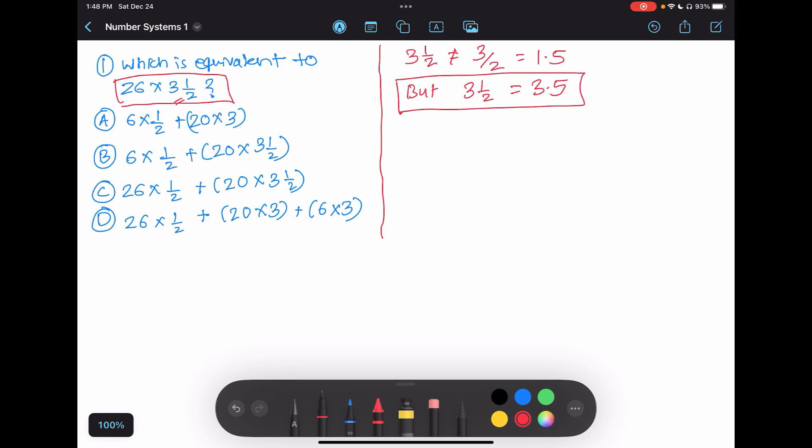Whereas if you see here, they're showing 6 multiply by ½, so that makes it 6 divided by 2, which is 3. So this is the different way of showing numbers in GRE problems.